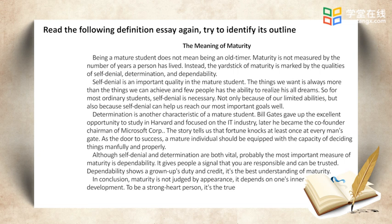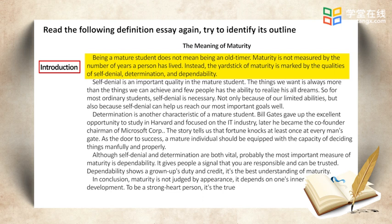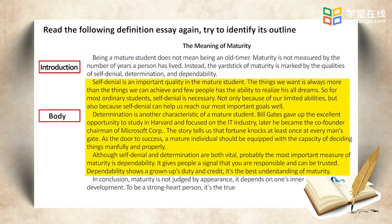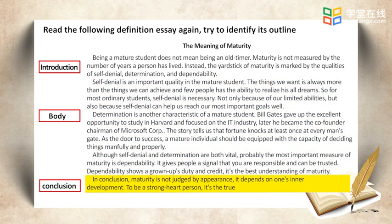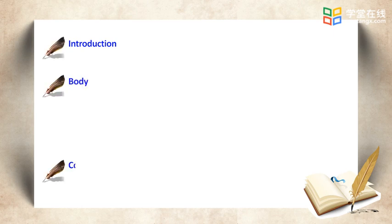Having learned some useful tips for developing the thesis statement, we can then start to brainstorm the outline of a definition essay. It is quite easy to identify the outline of this essay. The first paragraph is the introduction part. The second, third, and fourth paragraphs form the main body, which explains the subtopics listed in the thesis statement, while the last paragraph is the conclusion. Our sample essay makes it clear that, like other types of essays, a definition essay mainly comprises three parts: the introduction, the main body, and the conclusion.